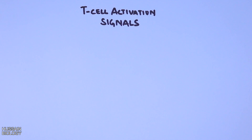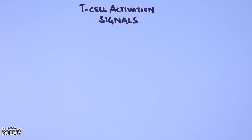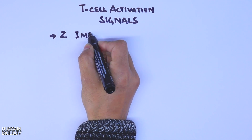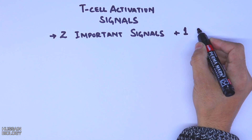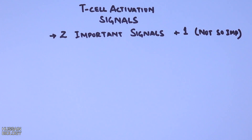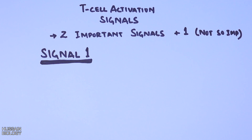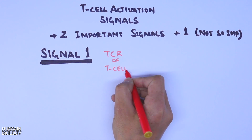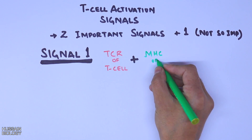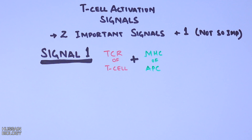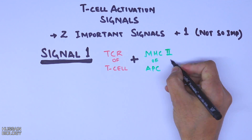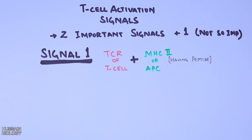Moving forward to T cell activation signals: we need two important signals for activation, plus one accessory signal. The first signal is when the TCR — the T cell receptor — of the T cell interacts with the MHC molecule of the APC. For the CD4 helper cell, MHC2 with peptide interacts with the TCR of the T cell.